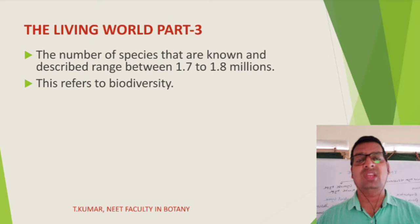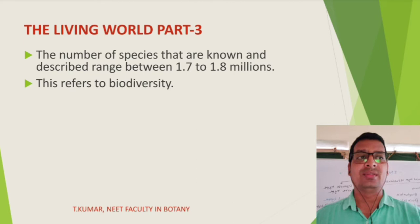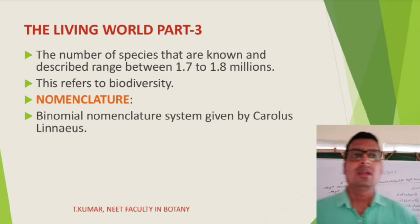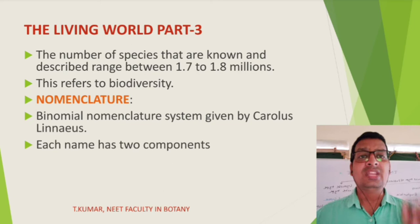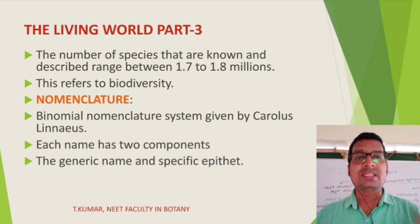Binomial nomenclature system was given by Carolus Linnaeus. Each name has two components: the generic name and the specific epithet.